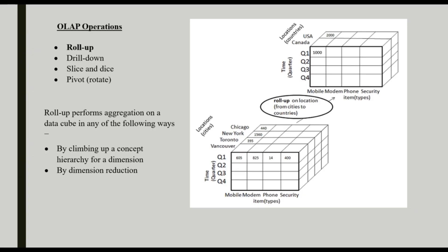Now, we are moving to OLAP operations. What are the main OLAP operations? Mainly four categories: roll-up, drill-down, slice and dice, and pivot. Pivot means rotate.